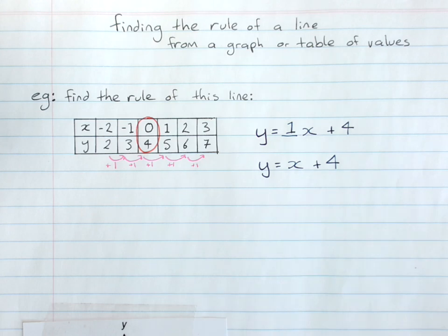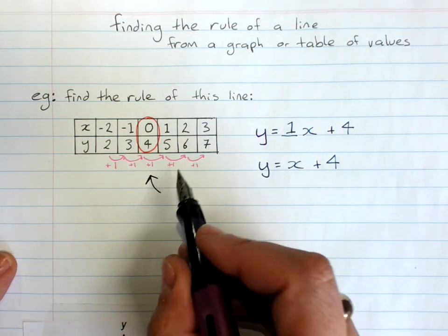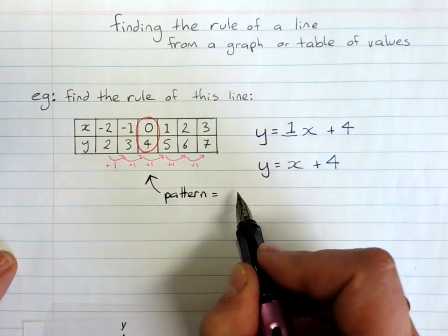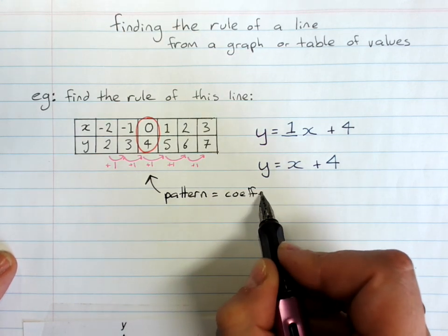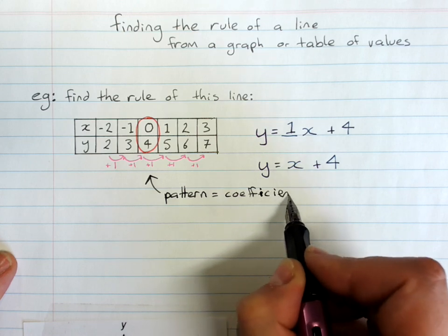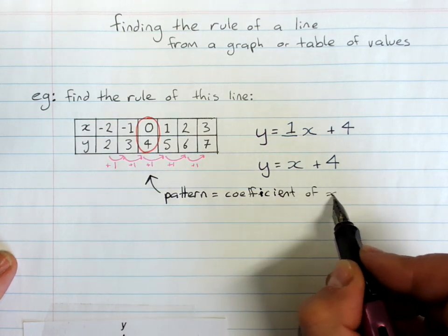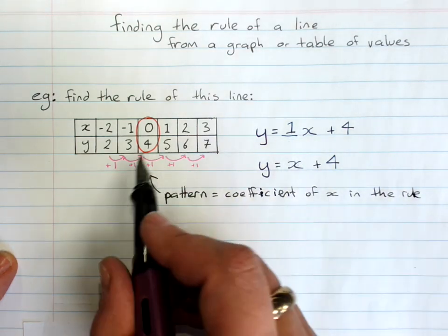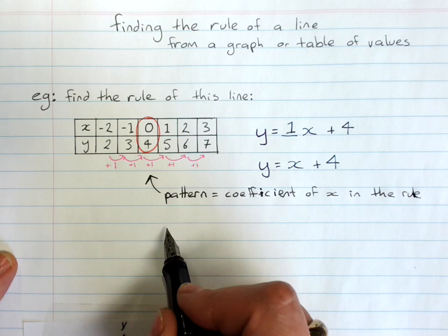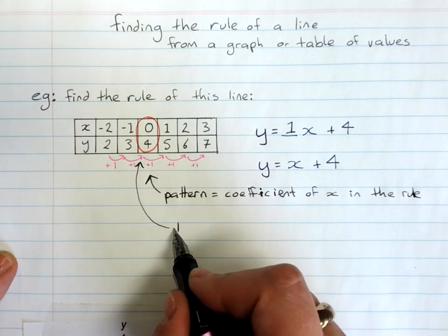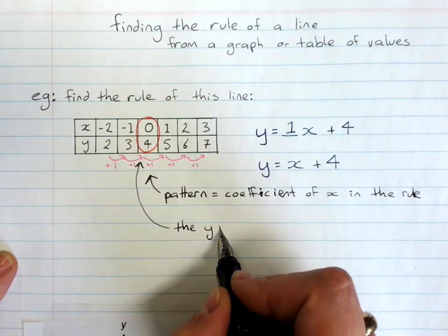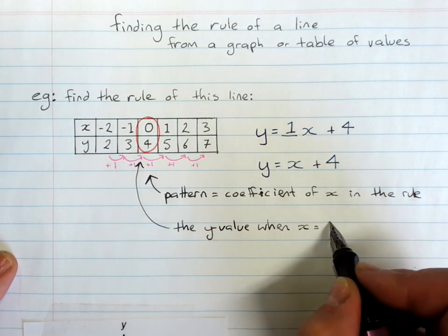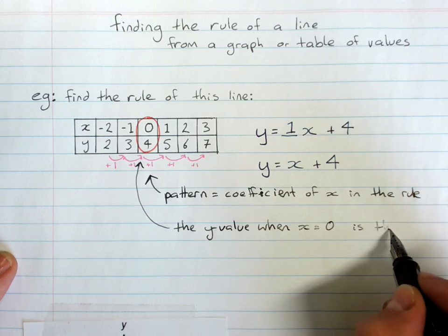So the pattern is the coefficient of x. That means the number that x is multiplied by. And the y value when x equals zero is the number on its own in the rule.